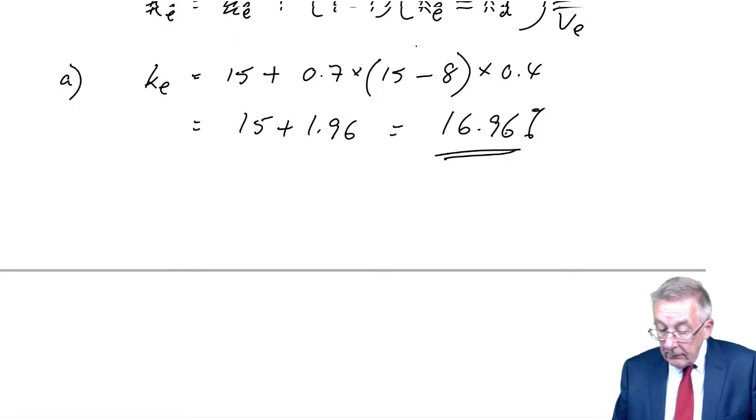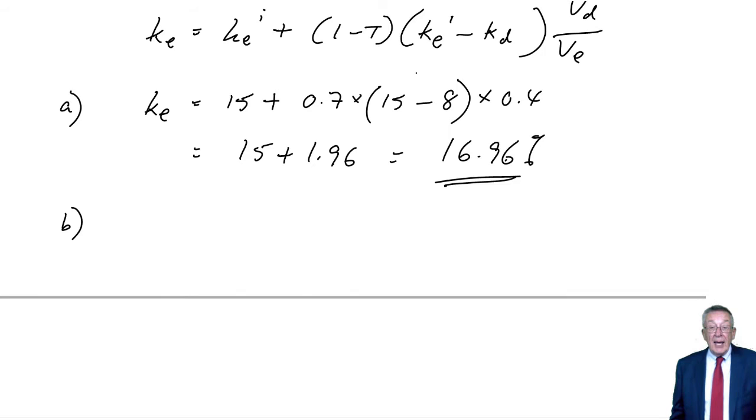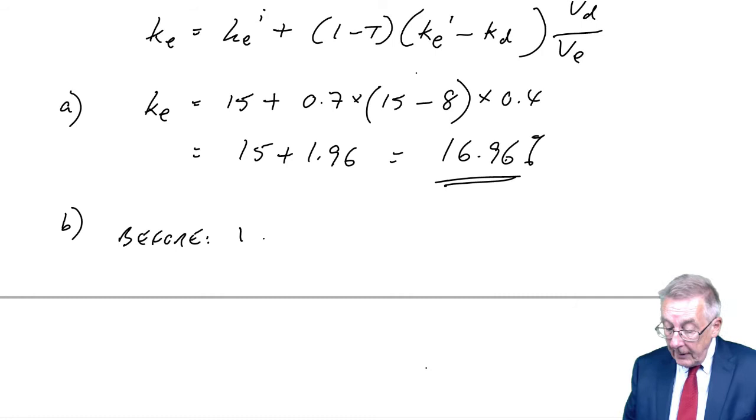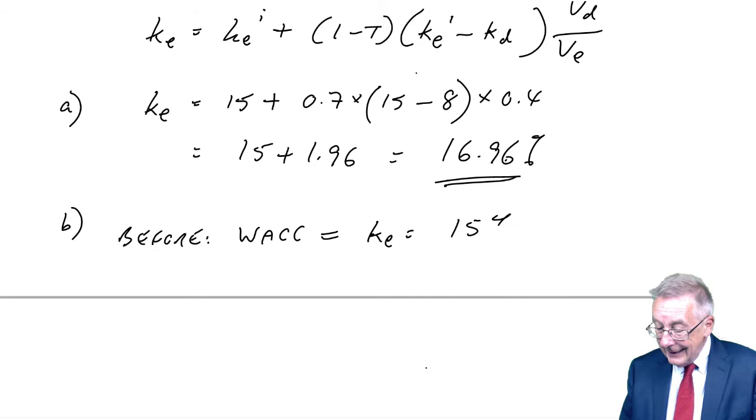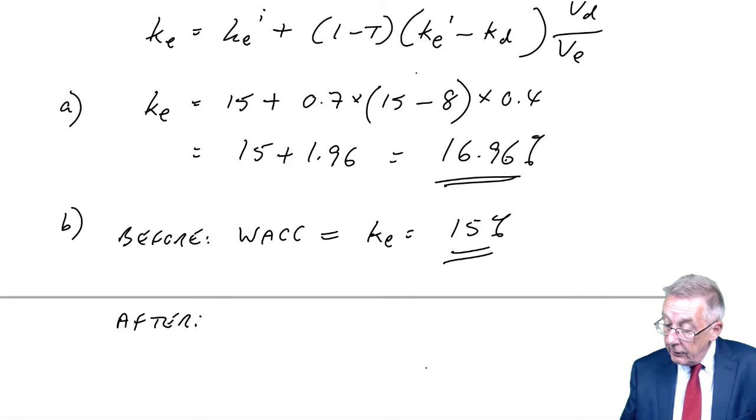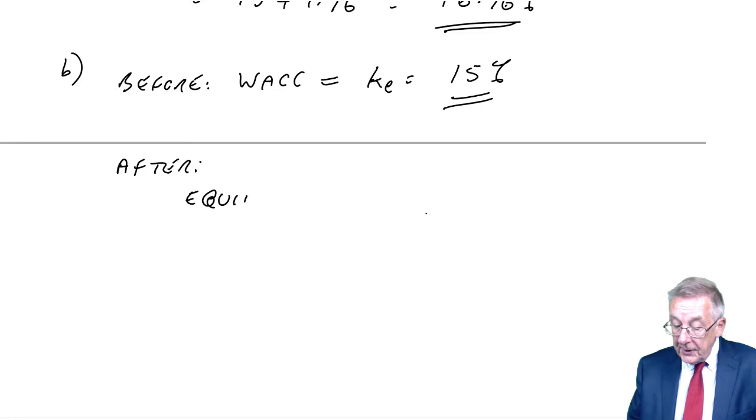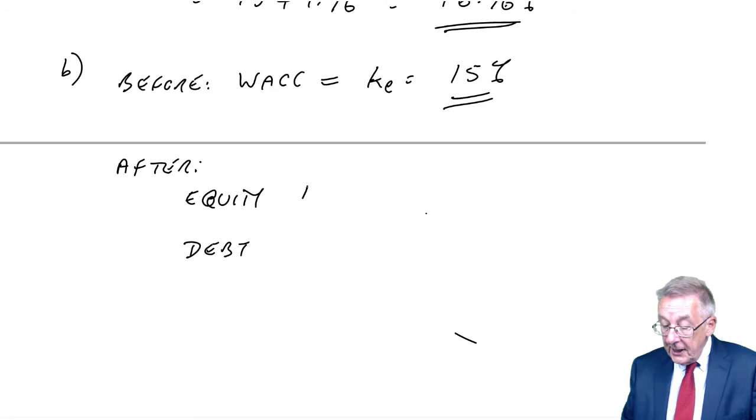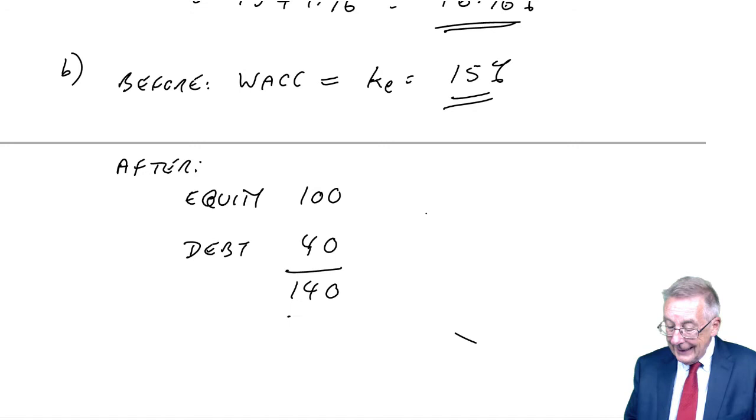Part B says: what is the WACC before and after we raise the debt? Before raising debt, it was ungeared, so the WACC was simply the cost of equity, 15%. After raising the finance, we have equity and debt. The gearing is debt as a proportion of equity: 0.4. So for every 100 of equity, debt is 40. Total market value is 140: 100 equity and 40 debt.